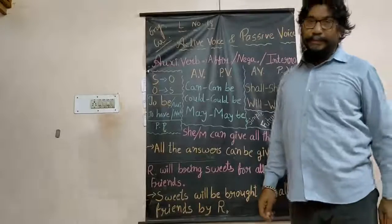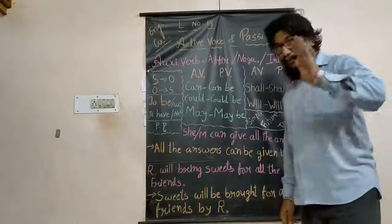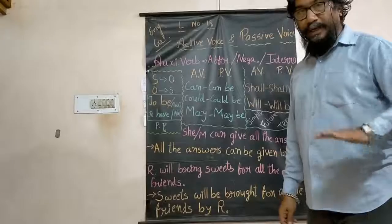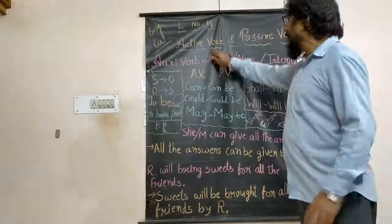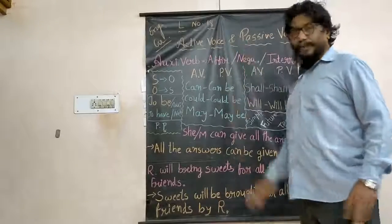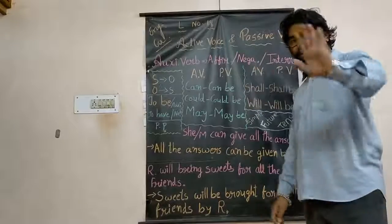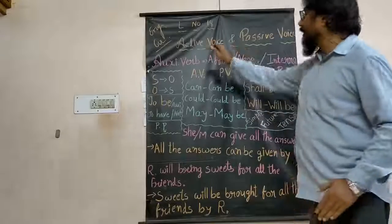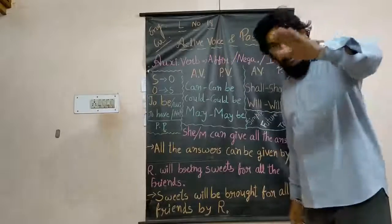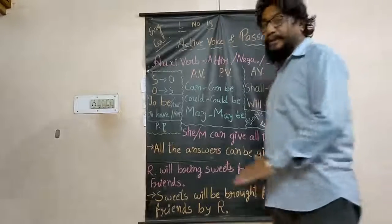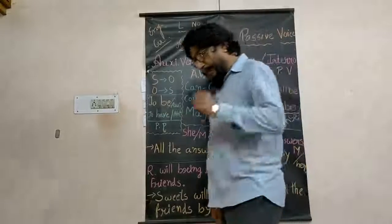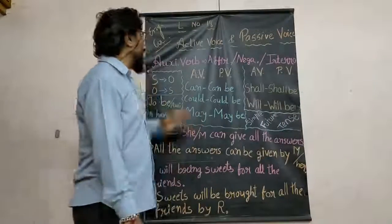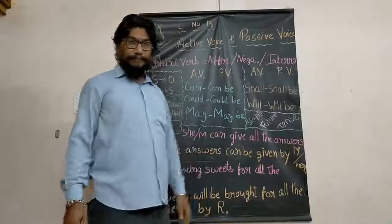Up till now we have completed simple affirmative, negative, and interrogative sentences with active to passive voice. That structure we have completed. Now we are going ahead with the auxiliary verb — if an auxiliary verb is given in the sentence, how will we move from active voice to passive voice?